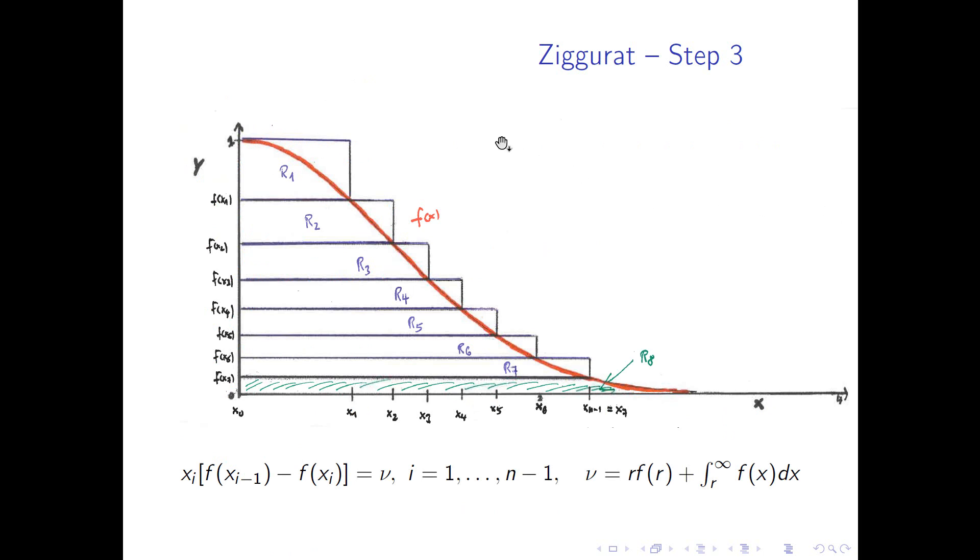Okay, so the whole thing becomes of course clear with the picture. So the red curve is f(x). And here we have the rectangles R_1 up to R_7 and R_8, the green stuff, is the base strip. And all the rectangles and R_8 are supposed to have the same area. So let's recall the area of the base strip. That's r times f(r). So this is the area of this rectangular part of the base strip. Plus the integral from r going to infinity f(x)dx. That's the area of the remaining part here. And for the area of the rectangles, let's pick for example R_3. That's i equal to 3. So what's the height? The height is f(x_2) minus f(x_3). And the length is x_i, which is x_3. And we need to multiply everything. And in this example from 1 to 7, for these 7 rectangles, this is supposed to be equal to nu, as the area of the base strip.